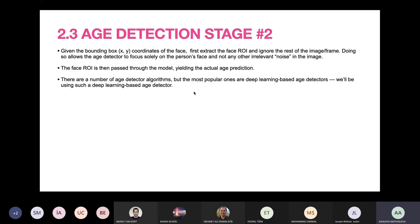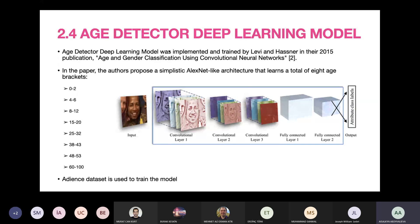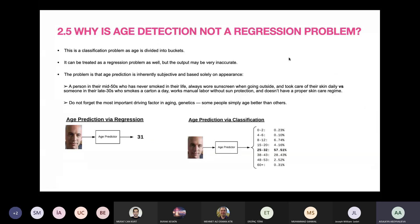We will be using the model implemented and trained by Levy and Hassner in their 2015 publication. In this paper, the authors propose a simplistic AlexNet-like architecture that learns a total of eight age brackets. The dataset used to train the model is the Adience dataset. The model has three convolutional layers, two fully connected layers, and the output provides class labels. Next, why have we modeled age detection as a classifier and not as a regressor?